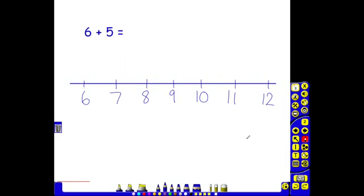In this example, the challenge given is 6 add 5. On the number line, the children would recognize that 6 is the larger number. They then need to add on 5. They would use the number line to add on 5 jumps: 1, 2, 3, 4, 5, taking them to 11, which is their answer. So 6 add 5 is 11.